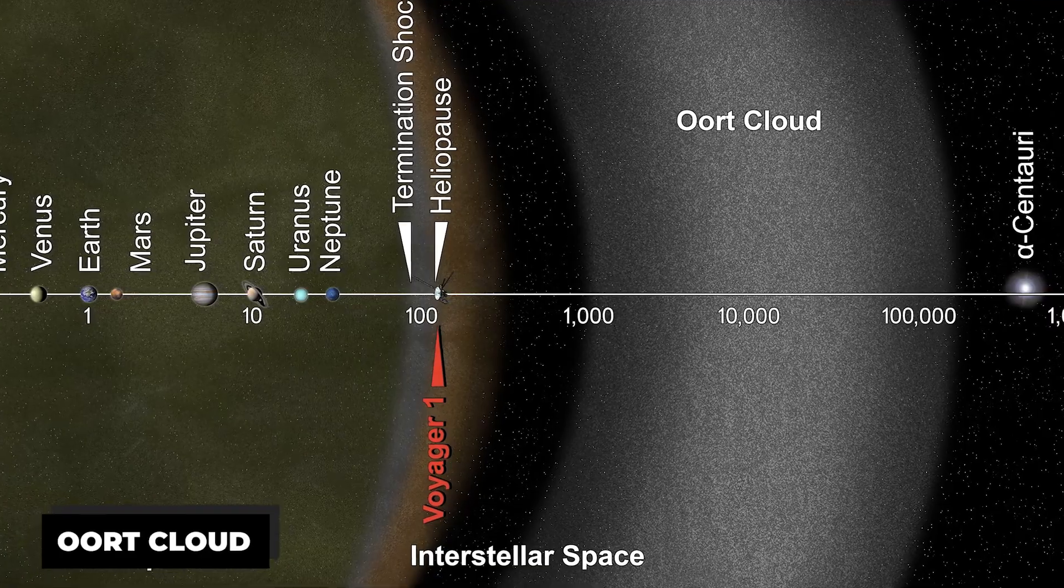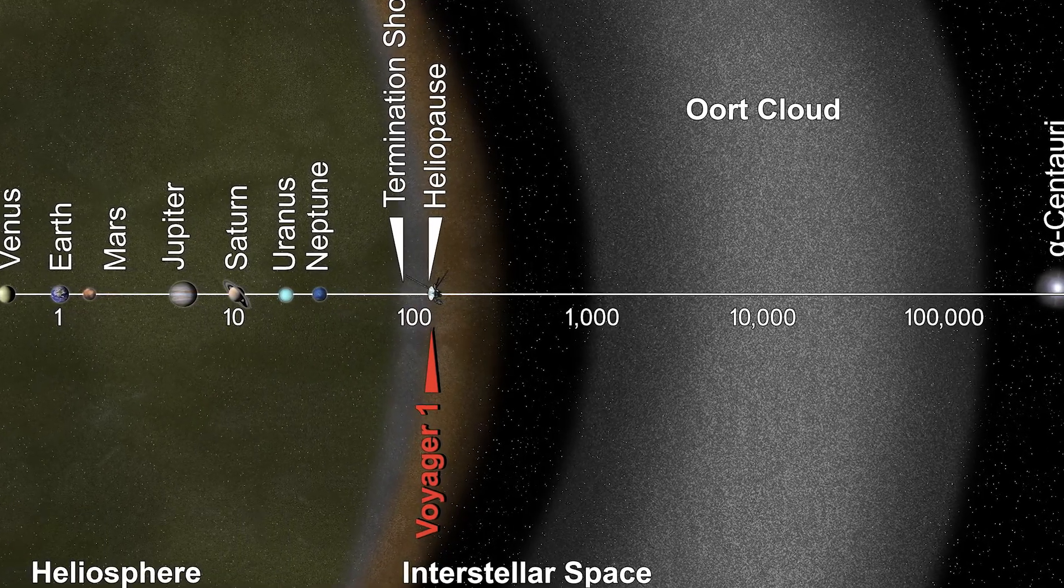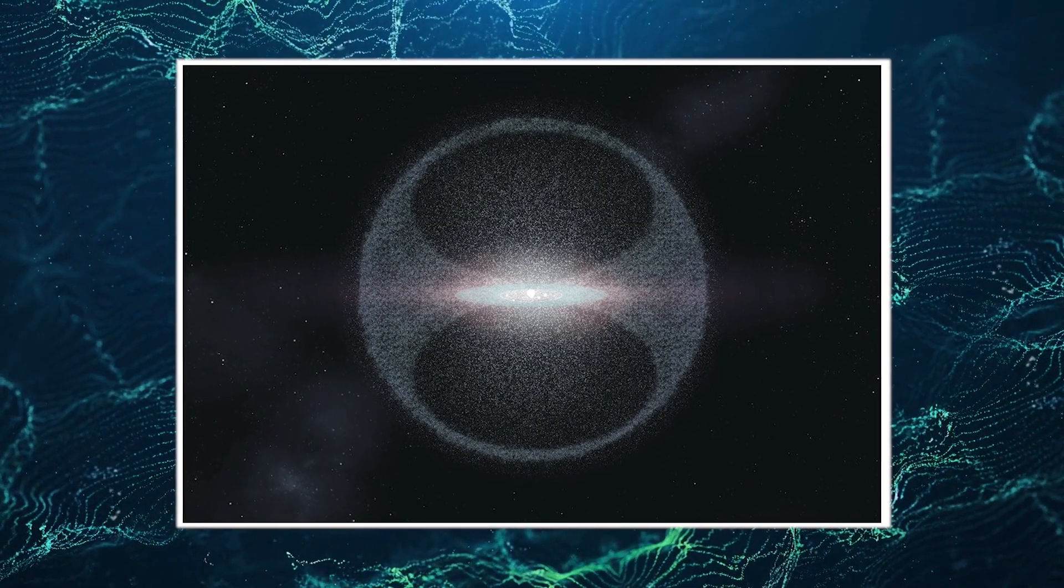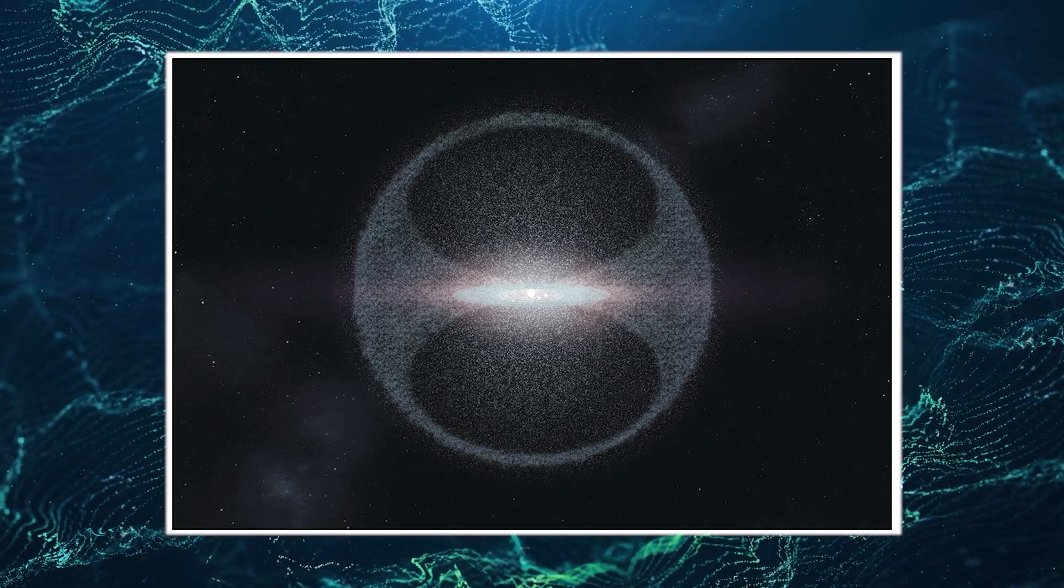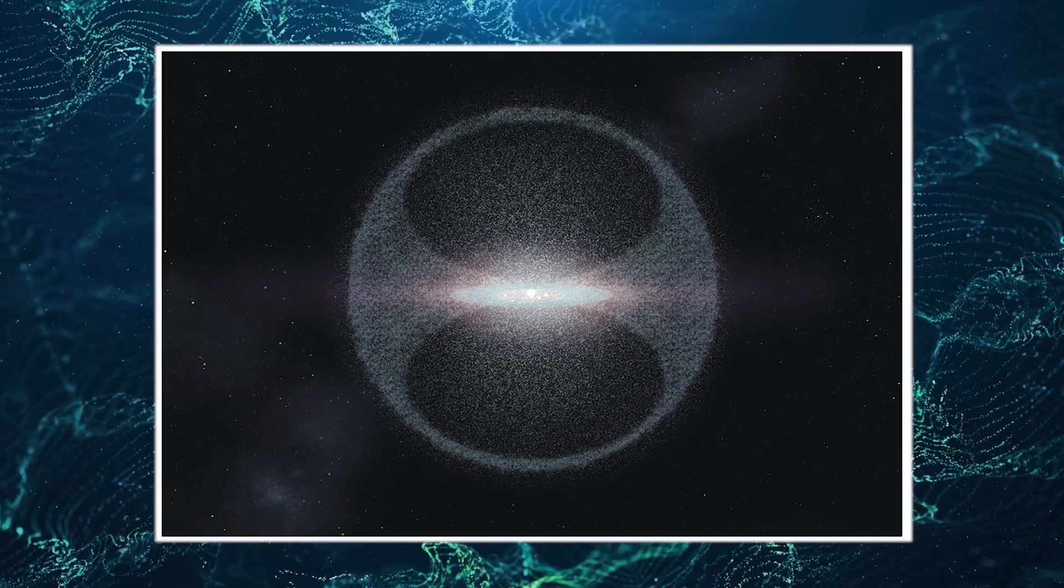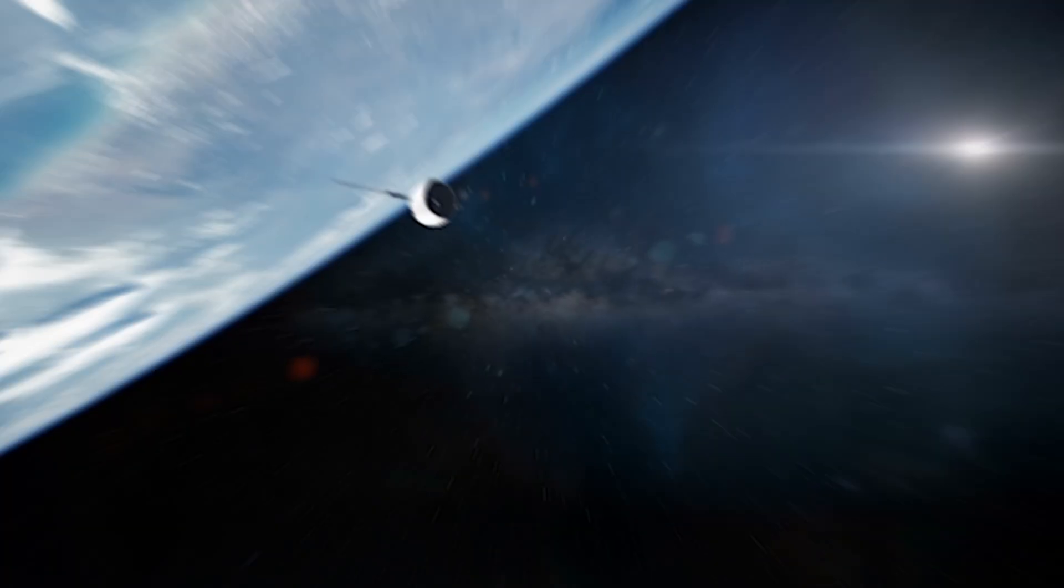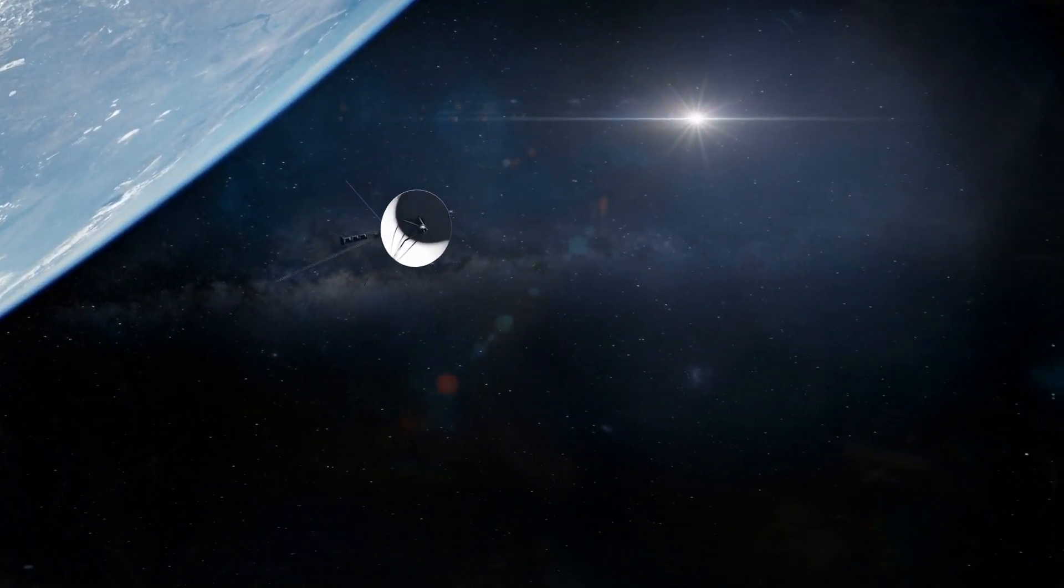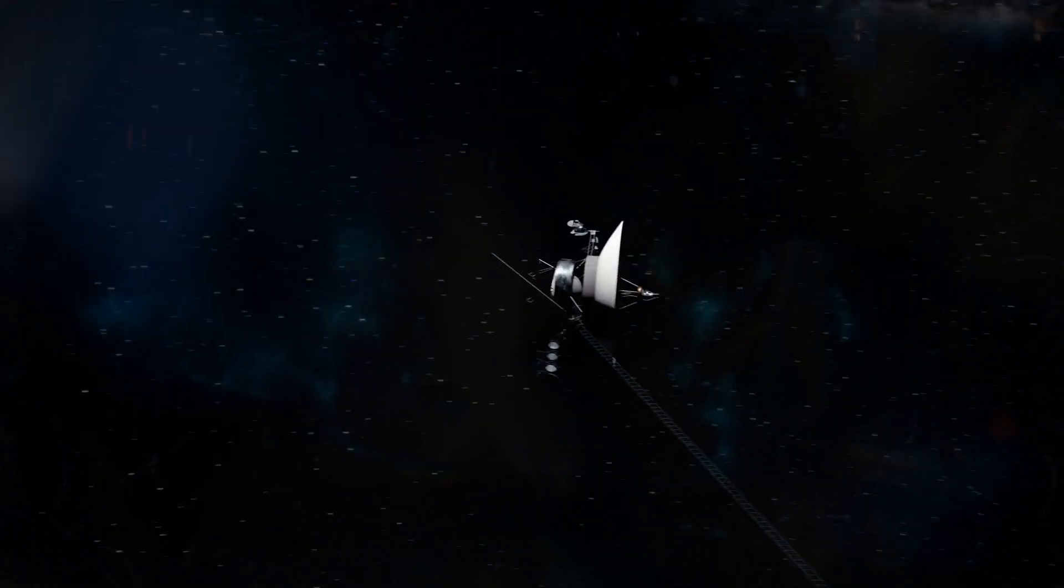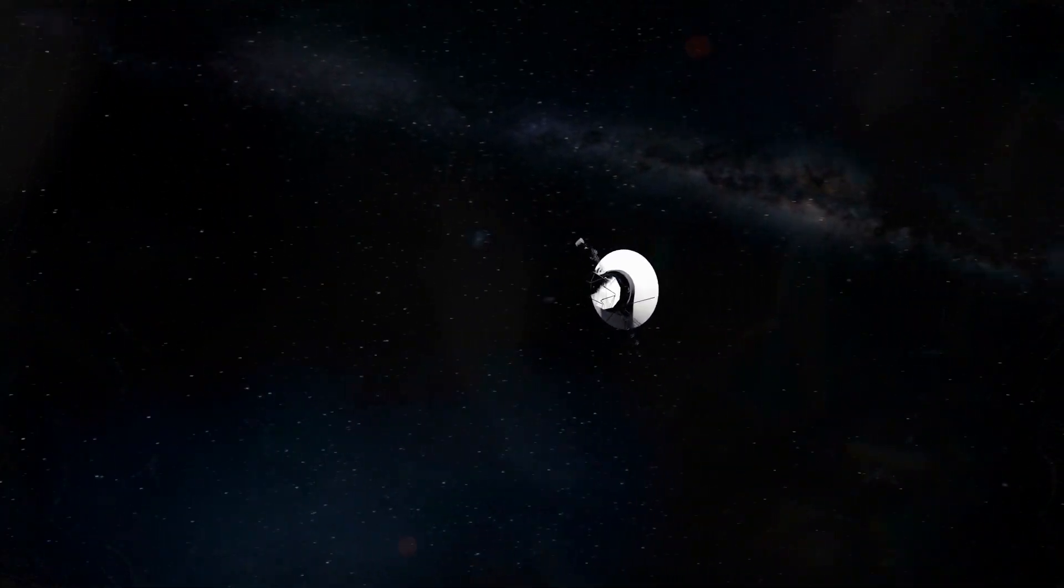Far beyond lies the enigmatic Oort Cloud, a collection of comet-like objects held together by the gravitational pull of the Sun, stretching halfway toward the nearest star. While reaching the Oort Cloud remains a distant goal, the Voyagers steadily make their way toward this realm.